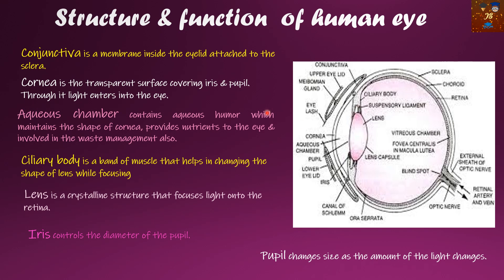The rest of the parts include the conjunctiva, a membrane inside the eyelid attached to the sclera. Next comes the cornea, the transparent surface covering the iris and the pupil, through which light enters the eye. The aqueous chamber is filled with aqueous humor fluid; it maintains the shape of the cornea, provides nutrients to the eye, and is involved in waste management.